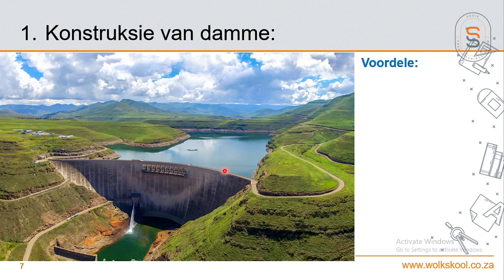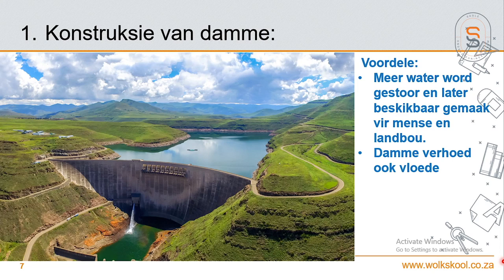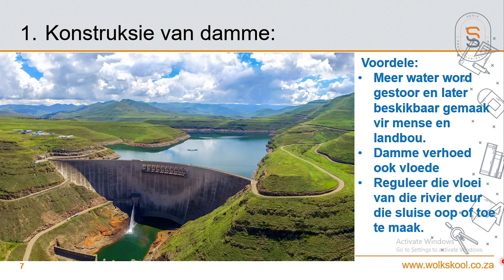Hier is nou al die voordele: meer water word gestoor, dit is meer beskikbaar vir die mense en die landbou en al die aktiwiteite wat die mens doen. Dan is 'n belangrike ding: damme verhoed ook vloede, want sal die rivier afkom dan gaan dit beteken die rivier gaan sy walle oorstroom en mense wat onder die vloedlyn huise het se huise gaan wegspoel en verdrinkings kan plaasvind. Wanneer jy 'n dam het, help dit om die water op te gaar sodat daar nie vloede is nie.